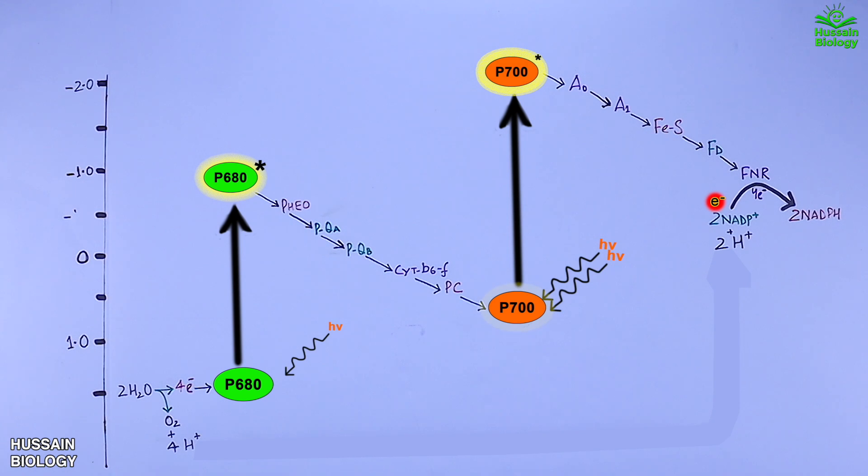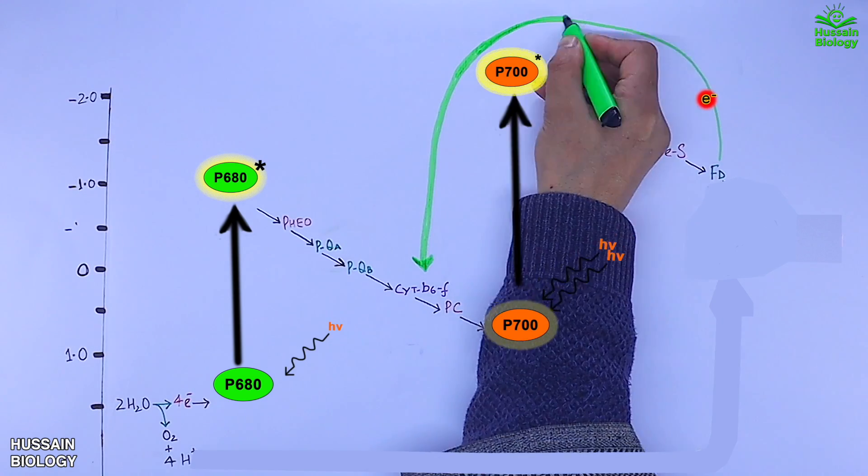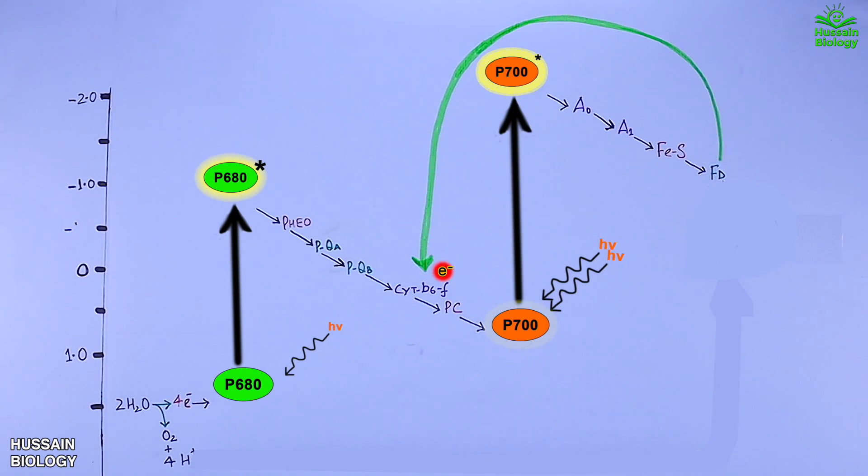Now if we go for cyclic electron flow, then we have no use of FNR and NADP+ molecules in that case. So we see here when the electrons reach the ferredoxin molecule, the ferredoxin transfers the received electrons to cytochrome b6f complex back, which is at higher reduction potential than ferredoxin, so the transfer is easily favored.